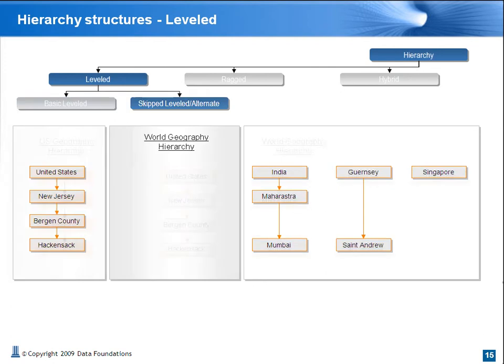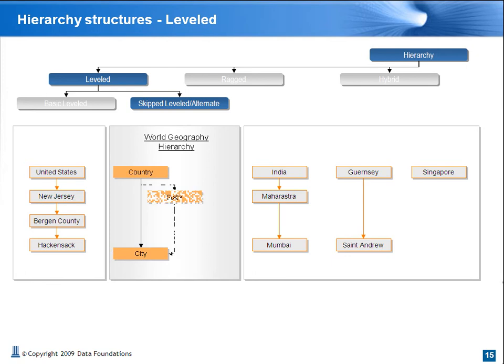Let's look at some different structural options for managing a world geography hierarchy. One option is to manage the hierarchy in a way that allows us to skip levels where not relevant. When we skip levels, we are creating alternate routes from root to leaf, or alternate hierarchies. Consequently, there is no redundancy.